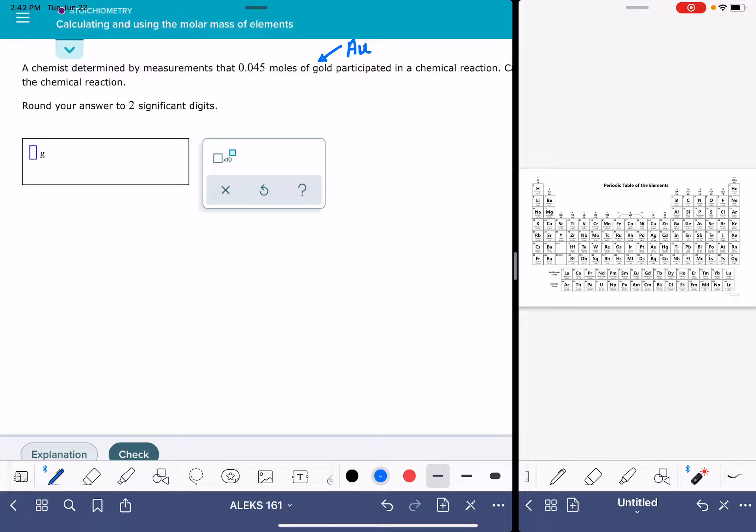You might still need to look some of those symbols up while you're getting familiar with them. And it is giving me a quantity of that gold. So I've been told that I have 0.045 moles of the gold.